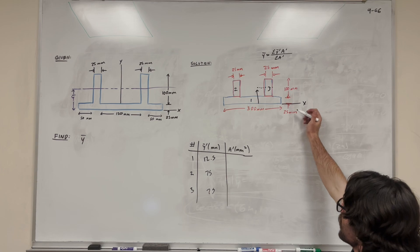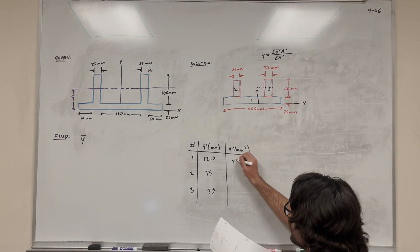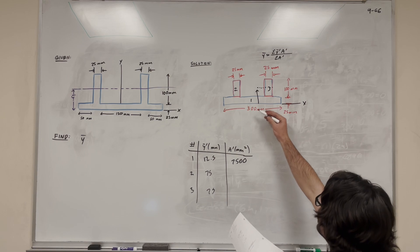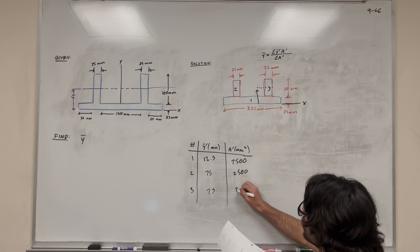So now area is pretty easy to find. We're just going to multiply base times width, so 300 times 25 gives us 7,500 for the first shape. Then 100 times 25 gives us 2,500 for these other two shapes.